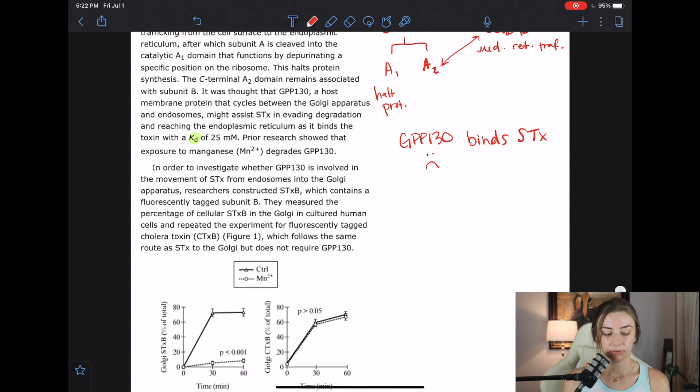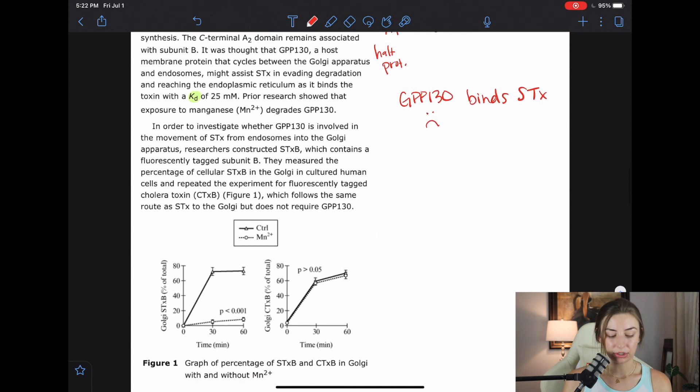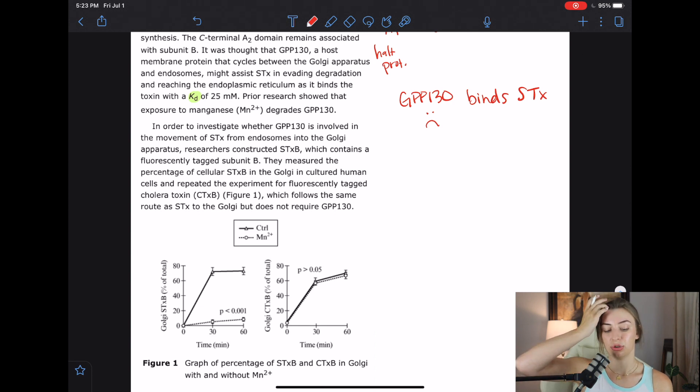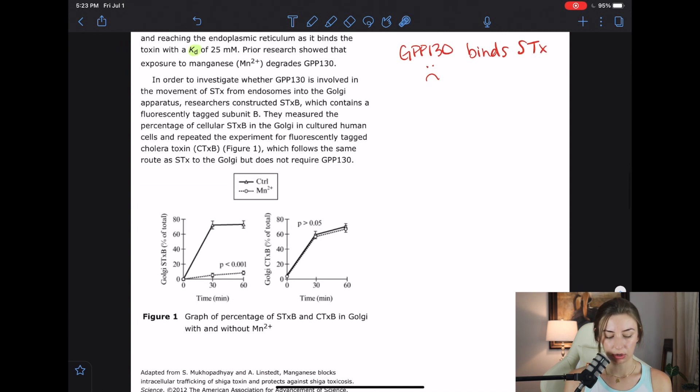In order to investigate whether GPP-130 is involved in the movement of Shiga toxin from endosomes into the Golgi apparatus, researchers constructed Shiga toxin B, which contains a fluorescently tagged subunit B. They measured the percentage of cellular Shiga toxin B in the Golgi in cultured human cells and repeated the experiment for fluorescently tagged cholera toxin, which follows the same route as Shiga toxin to the Golgi, but does not require GPP-130. I'm a little bit confused. I'm just going to go into the figure, graph of percentage of Shiga toxin and cholera toxin in Golgi with and without manganese. Okay. So they're adding in manganese, which would degrade the GPP-130 and still seeing if the Shiga toxin could. I got it, I got it.